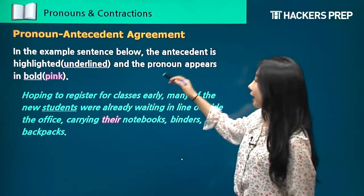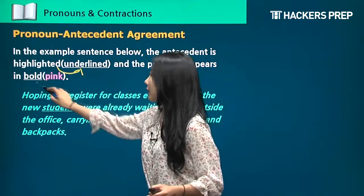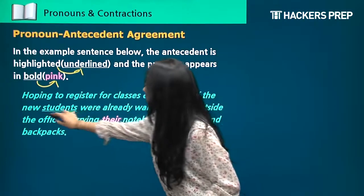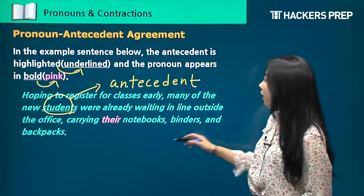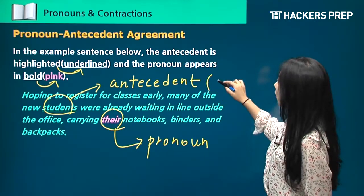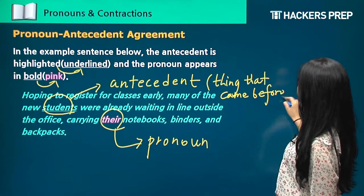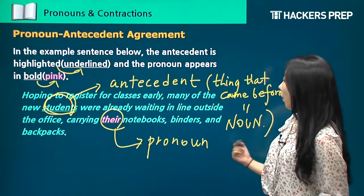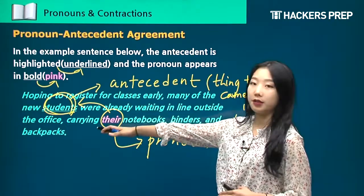In the example sentence below, the antecedent is highlighted and underlined, and the pronoun appears in pink on the screen: 'Hoping to register for classes early, many of the new students were already waiting in line outside the office carrying their notebooks.' The antecedent is 'students' — the noun that came before. 'Their' is the pronoun referring to students. Because students came first, students is the antecedent, and the pronoun referring to students is 'their.'